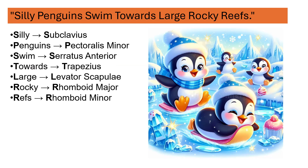The mnemonic for the muscles is: Silly Penguins Swim Towards Large Rocky Reefs. Silly is Subclavius, Penguins (P) is Pectoralis minor, Swim is Serratus anterior, Towards is Trapezius, Large is Levator scapulae, Rocky is Rhomboid major, Reefs is Rhomboid minor.